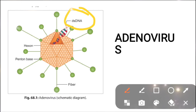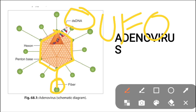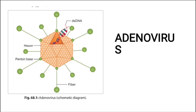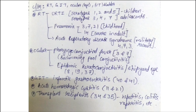The shape is icosahedral, with fiber proteins projecting from the vertices giving it a space-vehicle or UFO-type appearance. The structure includes hexon and penton base components. This is the structure of adenovirus — remember these points so you can write them in your exams.